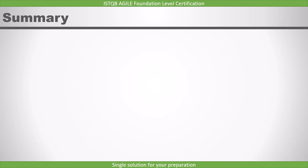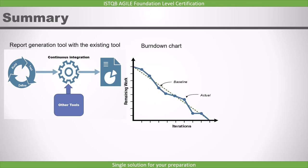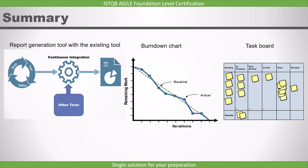In this lecture, we covered three communication tools. First, using tools, where we integrate the report generation tool with the existing tool. Then we covered the burndown chart — a graphical way of displaying the amount of work left to do in either an iteration or a release. Finally, we covered the task board, which provides an instant detailed visual representation of the whole team's current status, including the status of testing. In the next lecture, we will continue with this topic.